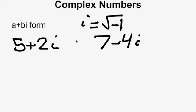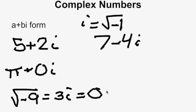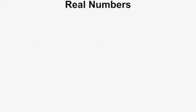Real numbers can be expressed as complex numbers. For example, pi can be written as pi plus 0i. Similarly, imaginary numbers like the square root of negative 9 can be written as 3i, which equals 0 plus 3i, so it can be expressed as a complex number. So both real and imaginary numbers fall under complex numbers.